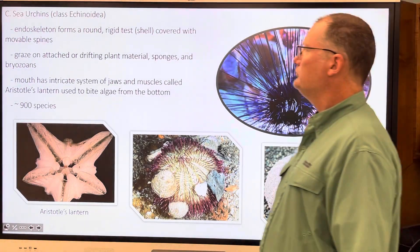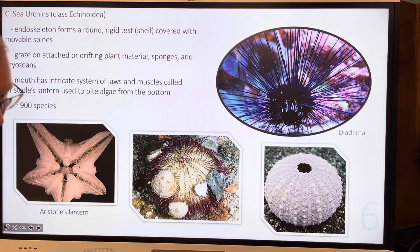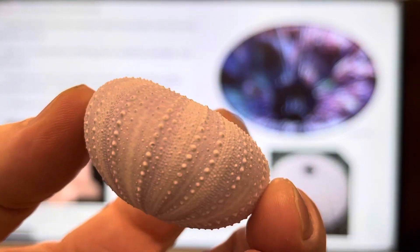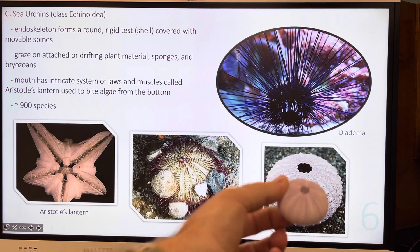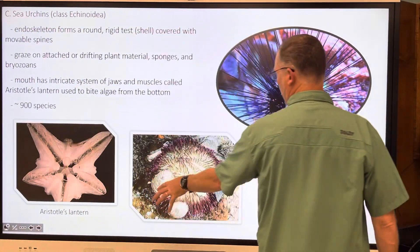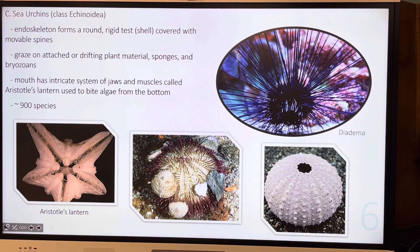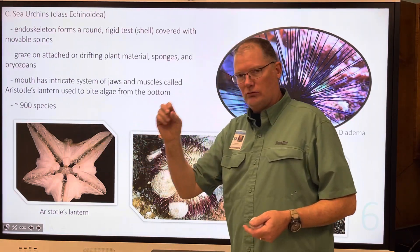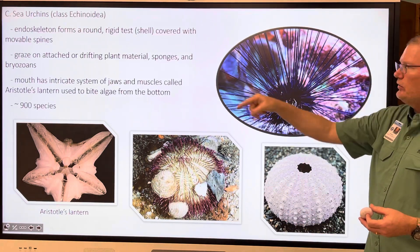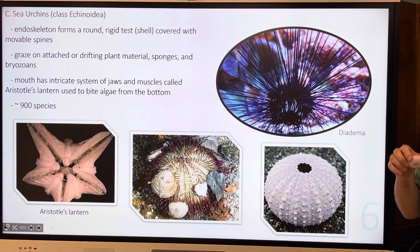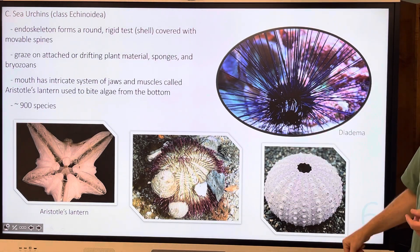Sea urchins have an endoskeleton that forms a round, rigid test — just like it's pictured right there. They graze along the bottom, sometimes covering themselves with camouflage. They eat plant material, sponges, and organisms called bryozoans. Their mouth has an intricate set of jaws called Aristotle's lantern — the bitey parts — used to bite algae from the bottom. They move around with tube feet that come out from their spines.